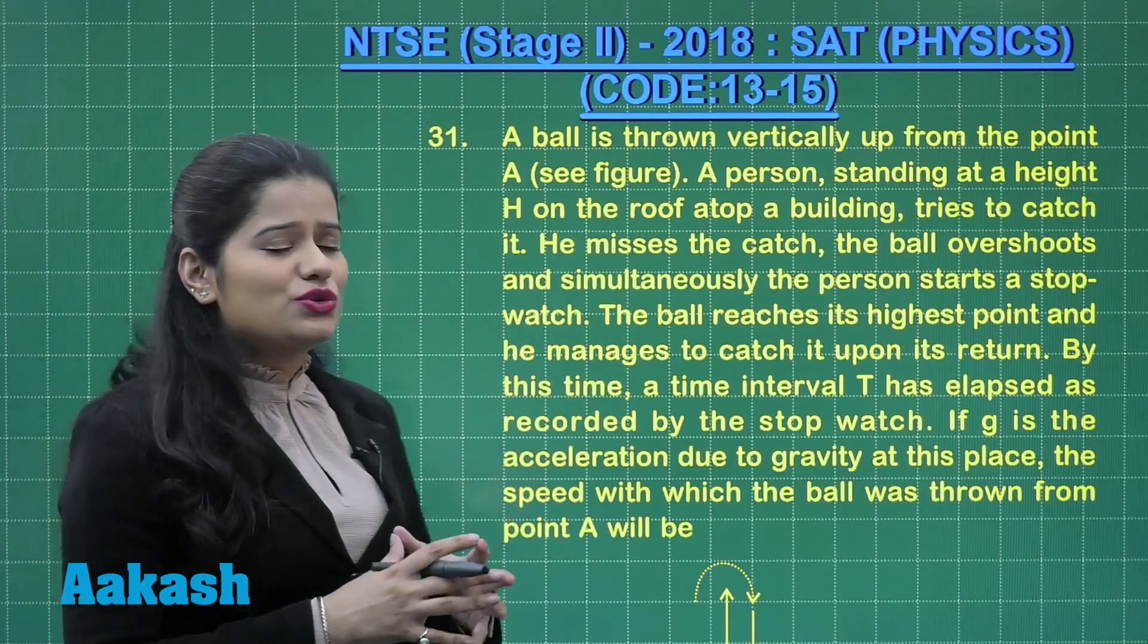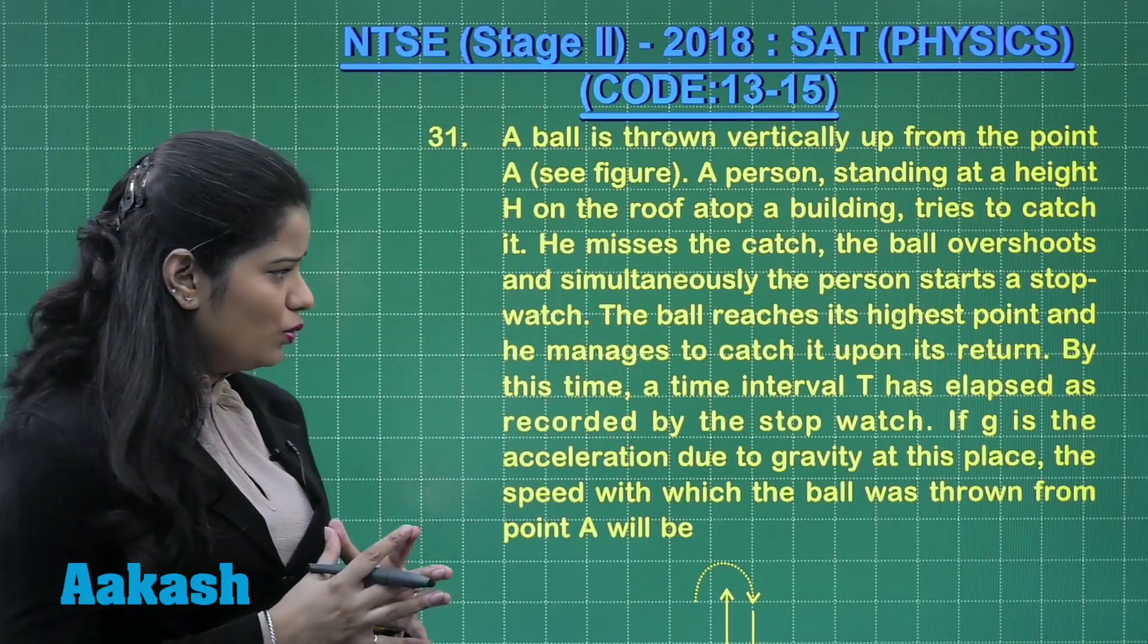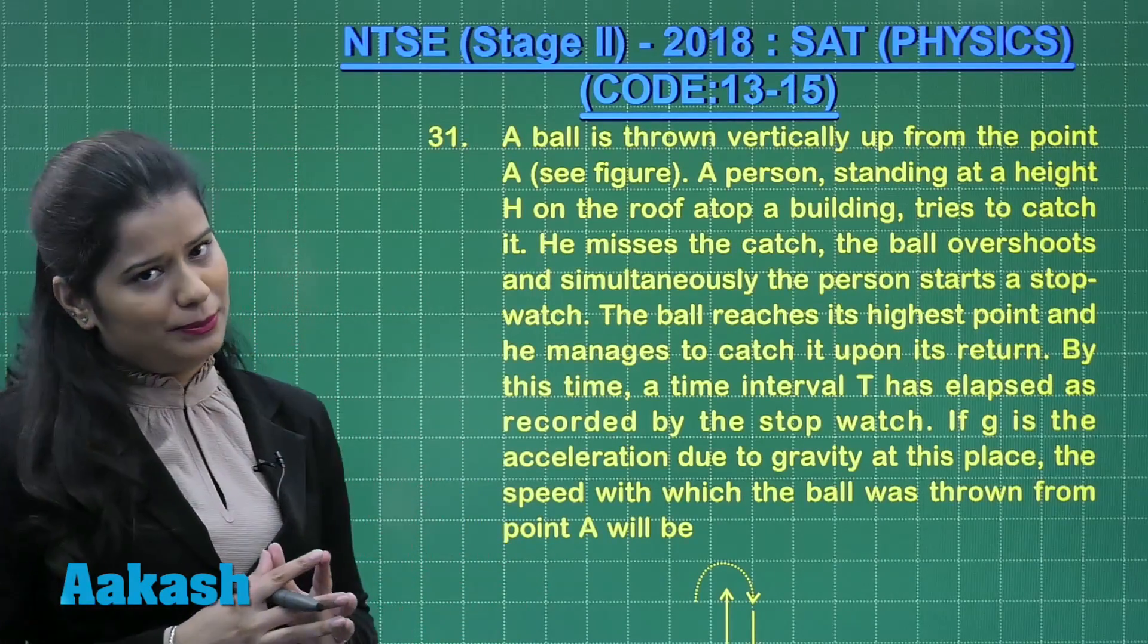a time interval T has elapsed as recorded by the stopwatch. If G is the acceleration due to gravity at this place, the speed with which the ball was thrown from point A will be.